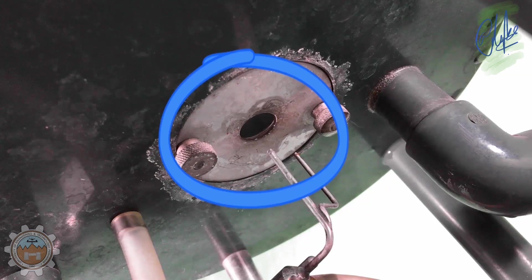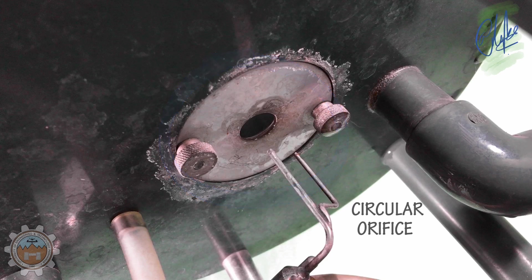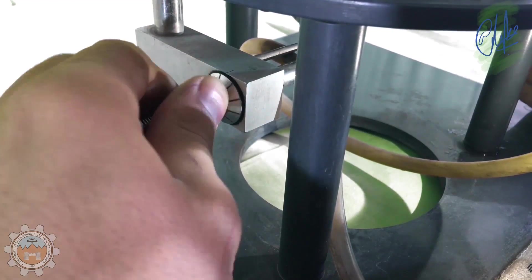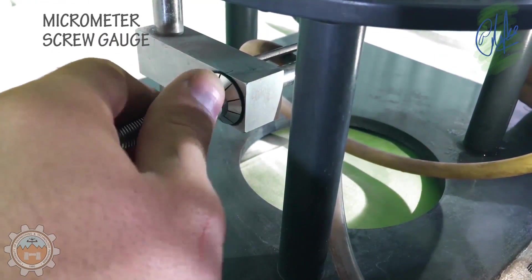This is the circular orifice located at the bottom. And yes the micrometer screw gauge where each revolution equals to one millimeter.